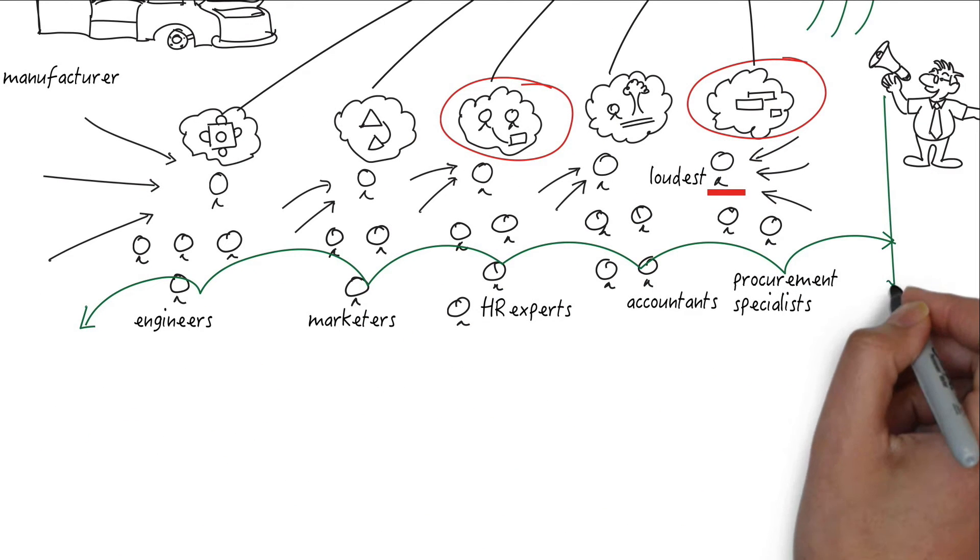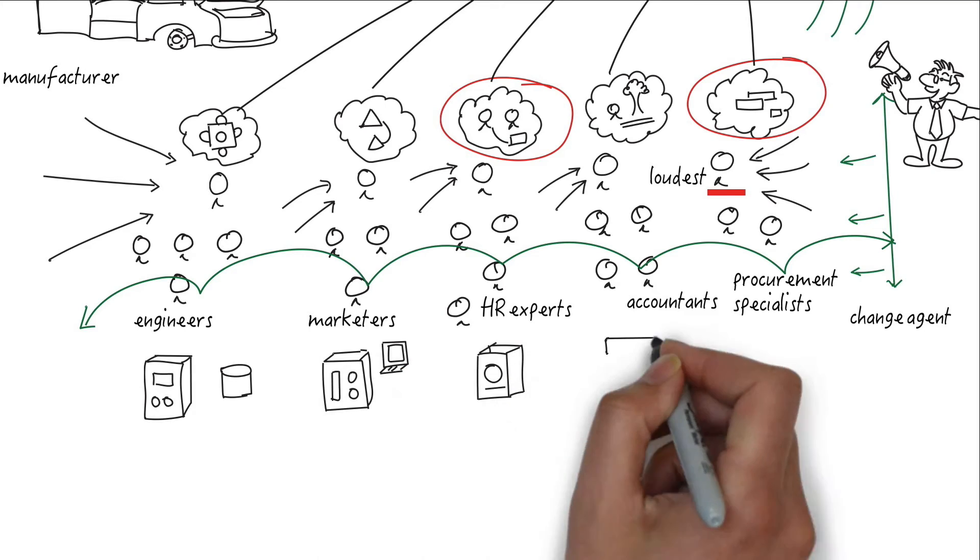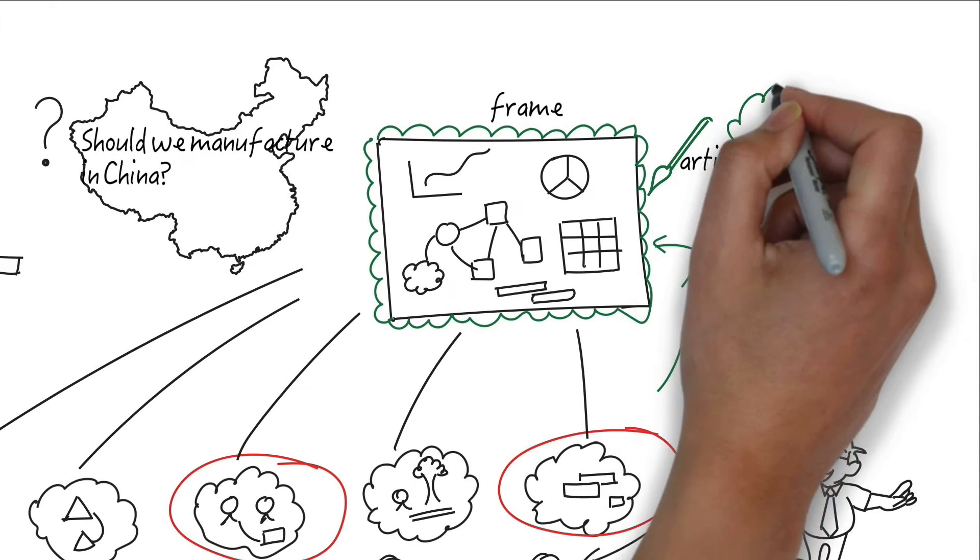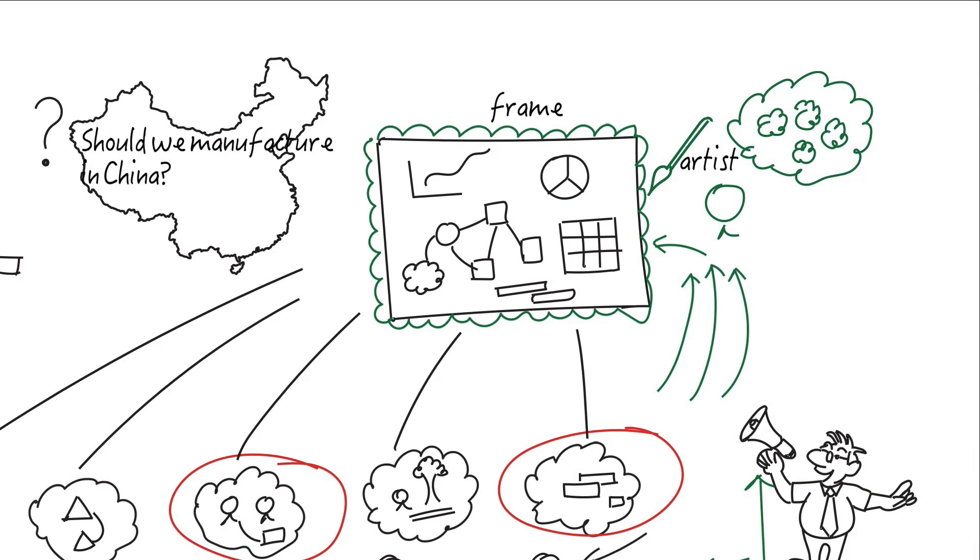This person is a change agent who can move seamlessly between the ranks and speak intelligently with people at different levels of the organization. This person is a technologist who can understand the role played by information technology systems. This person is a thought leader who can guide the direction of the conversation.